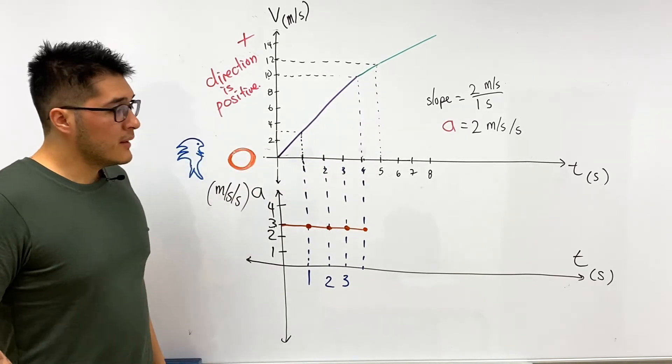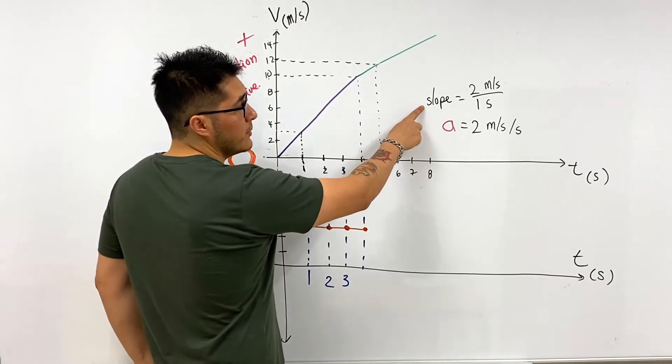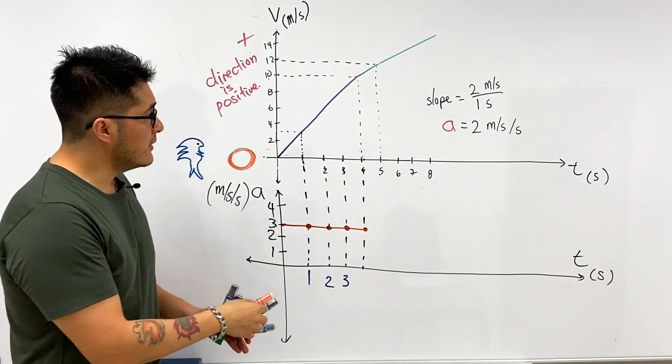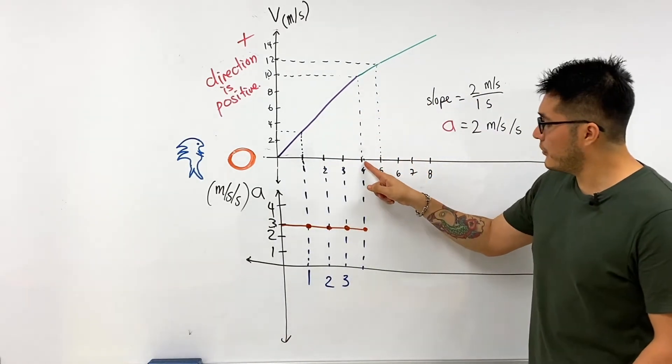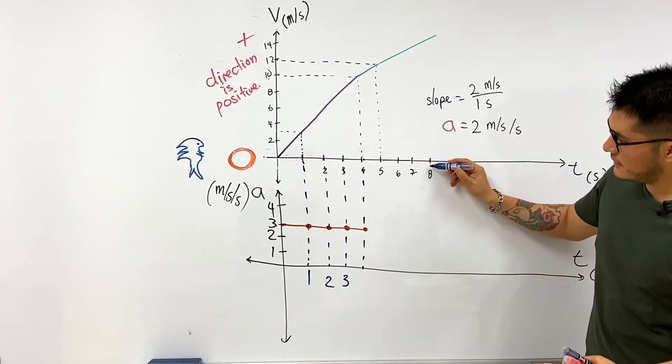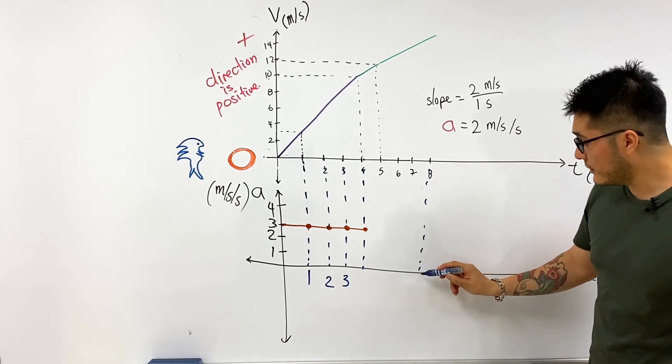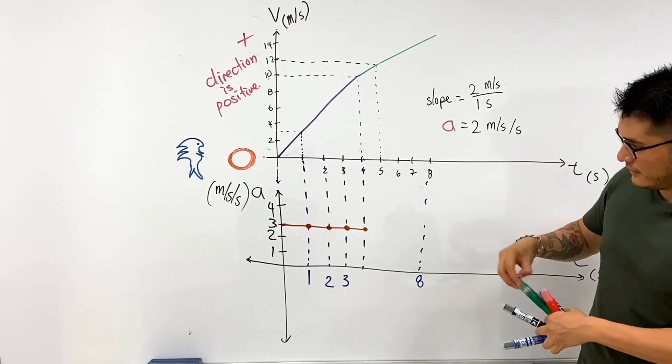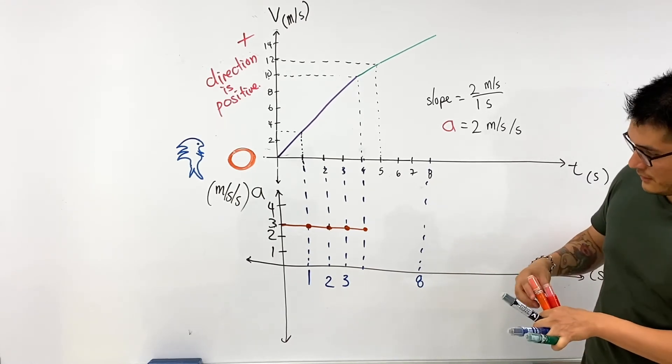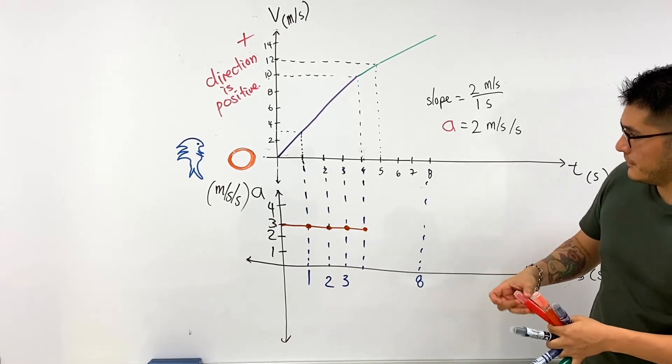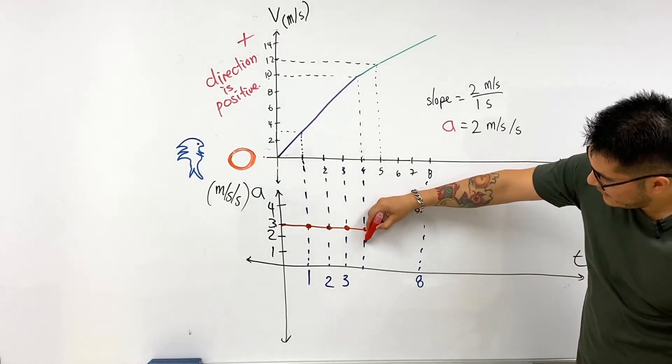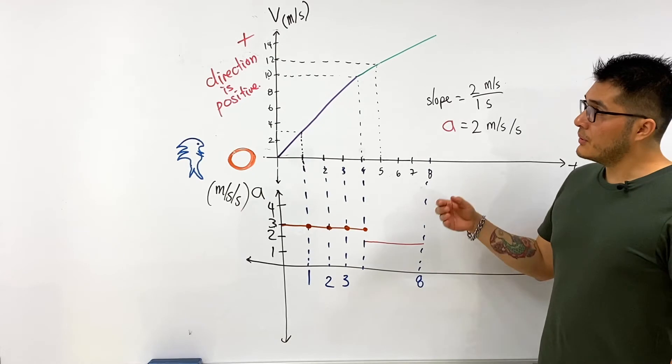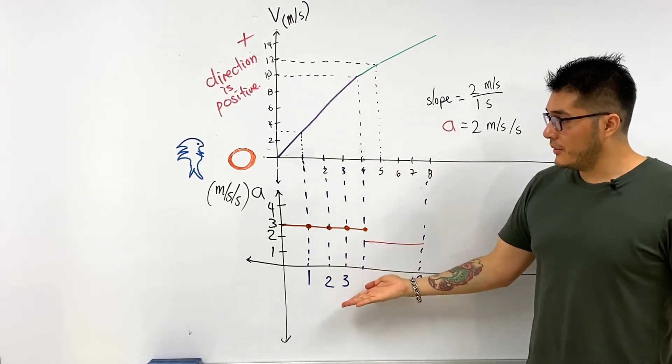And then for the green line, we found that the slope of the velocity time graph was two meters per second per second, which is our acceleration. And we can plot that for the duration of the time from four seconds all the way up to eight seconds. So let's go to eight seconds here. And during this time interval, it was accelerating at two meters per second per second. So this is how we can go from a velocity time graph to an acceleration time graph. All we have to do is calculate the slopes.